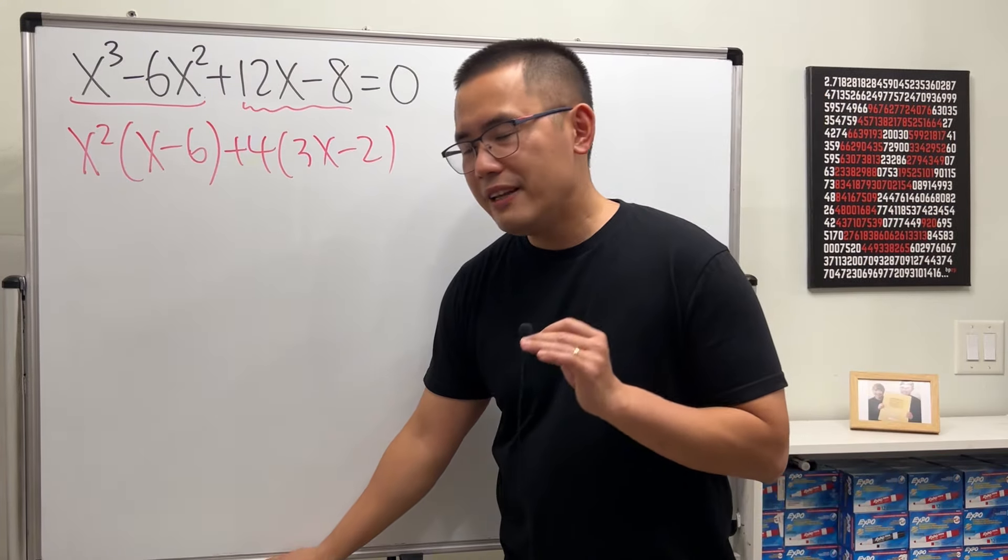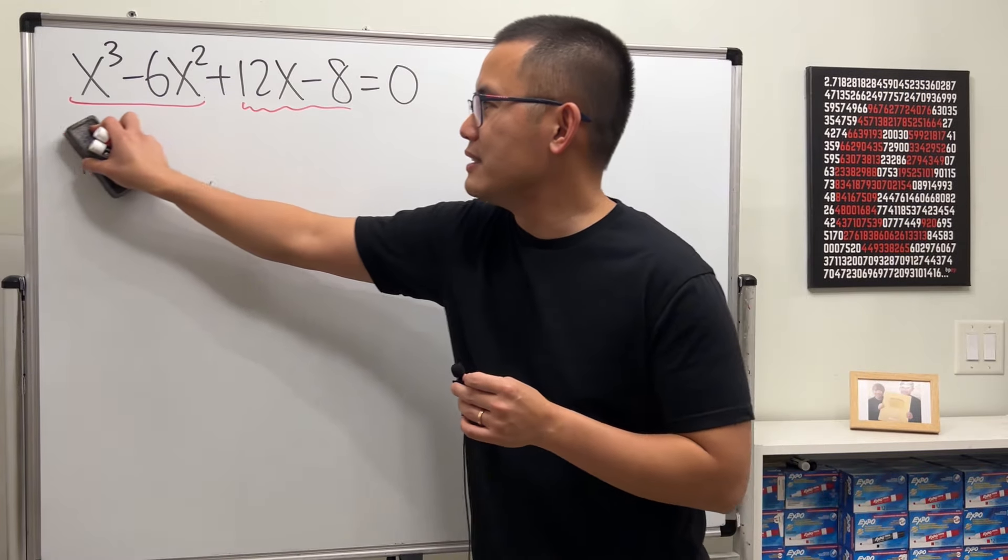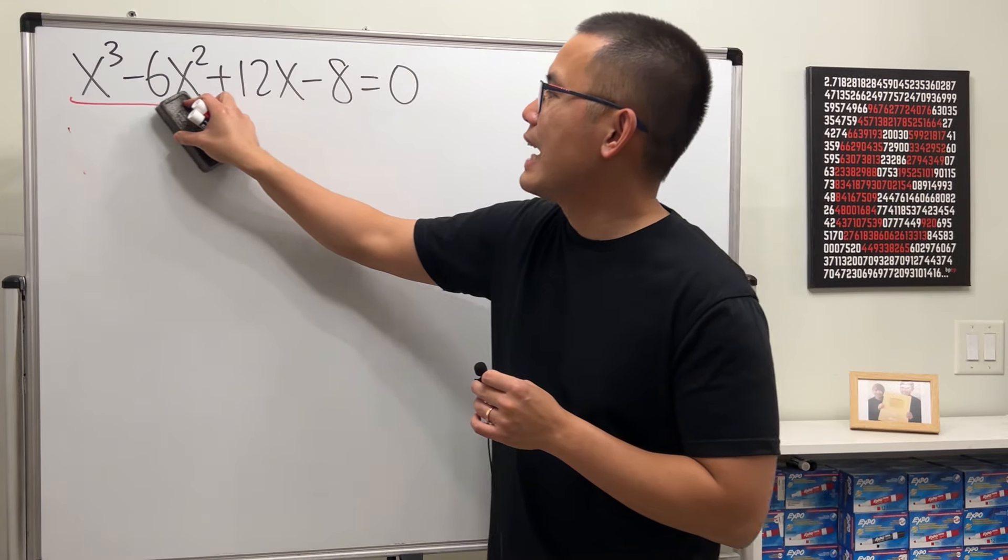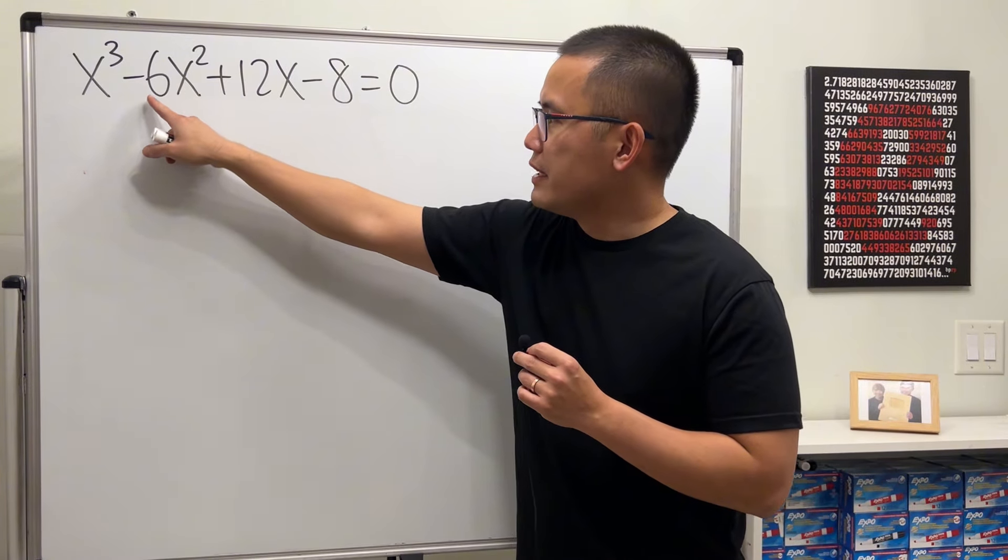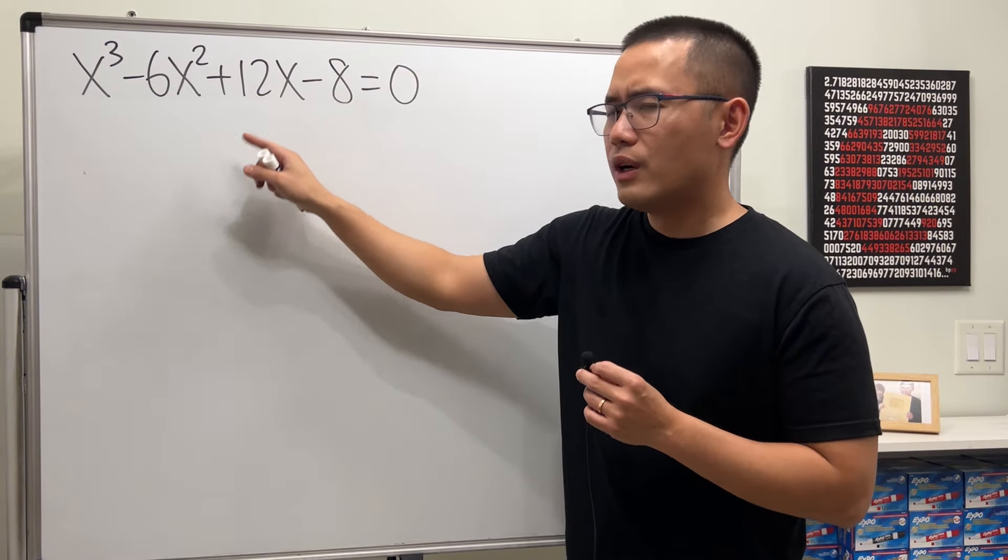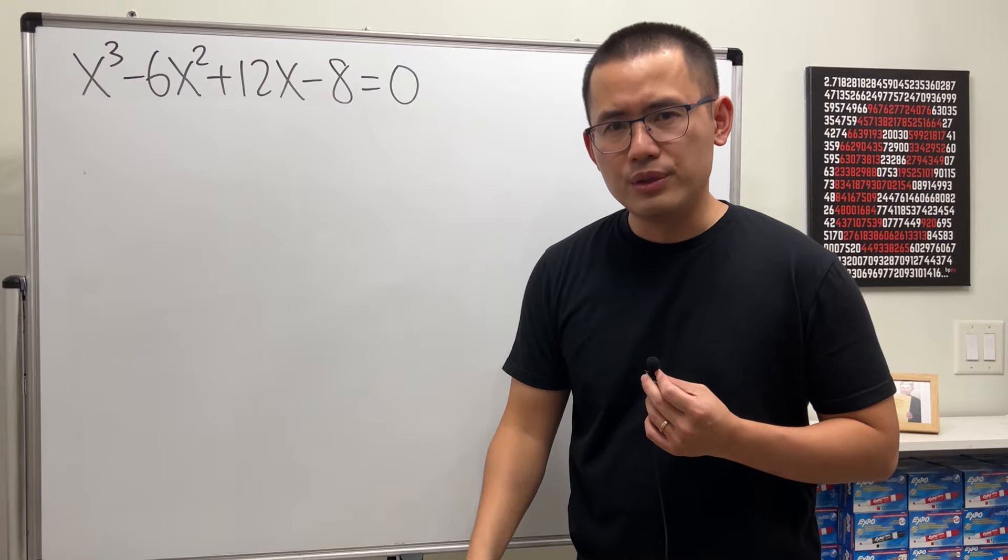But don't worry. In fact, we can still factor this. It's just not that kind of grouping. Have a look. Here we have negative 6 and 12. We can factor out 6. That's pretty good, right?